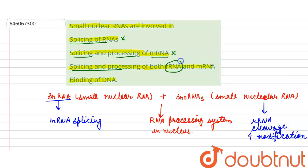Third option is splicing and processing of both rRNA and mRNA which will be the correct answer, and the last option is binding of DNA which is also incorrect with respect to the function of snRNAs. So the correct answer of this question will be C. Thank you students.